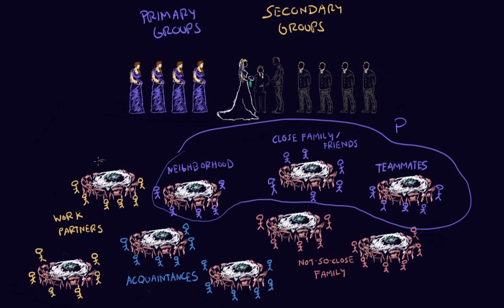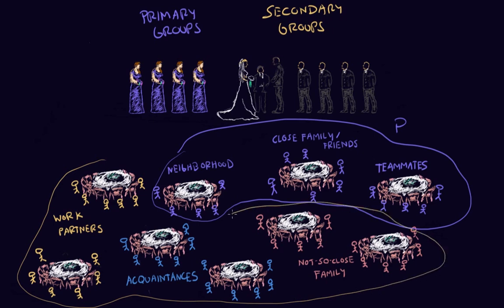So these are all examples of the bride and groom's secondary groups — they aren't close relationships, they're more formal. The big takeaway from this video is that primary groups are close, intimate, long-term relationships, and that secondary groups are short-term and often goal-oriented relationships.